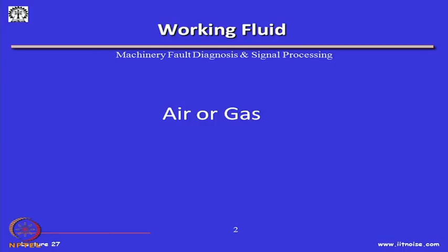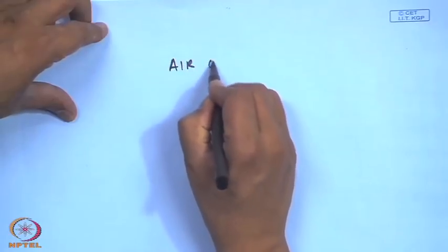Before getting into the details of fault diagnosis in fans, blowers, and compressors, let me briefly give you an example of how different they are from other fluid handling machinery like pumps and turbines. Pumps and turbines handle liquid fluid such as water or other chemicals, but when we talk about air handling devices, we talk about fans, blowers, and compressors, where the working fluid is usually air or gas.